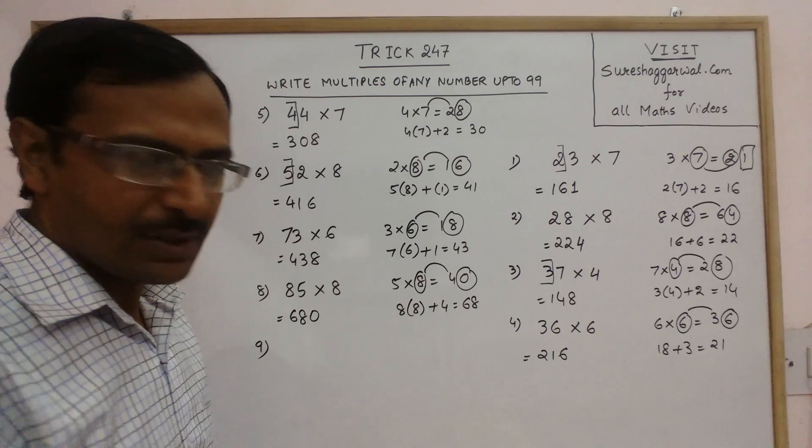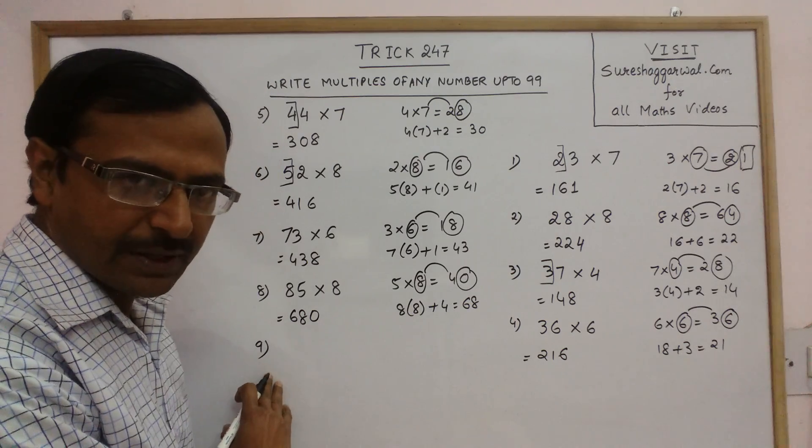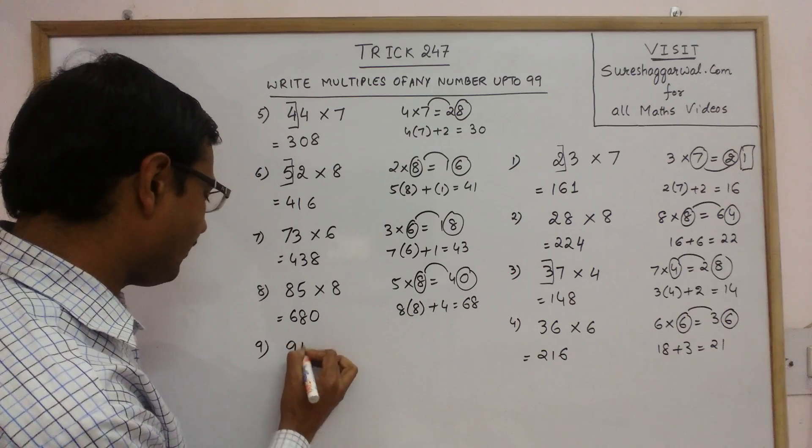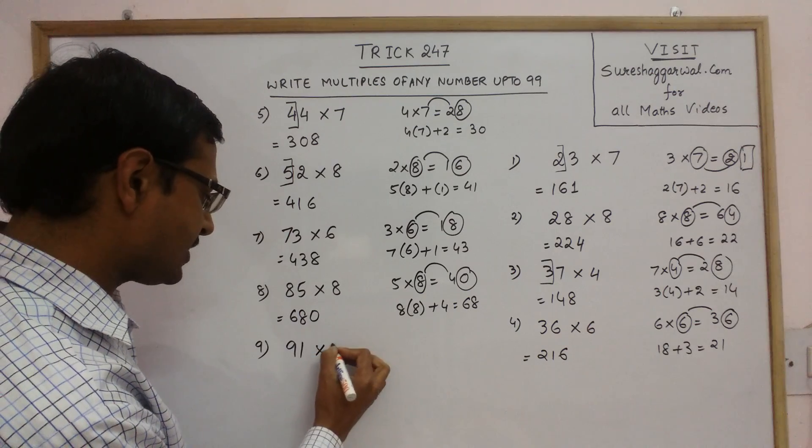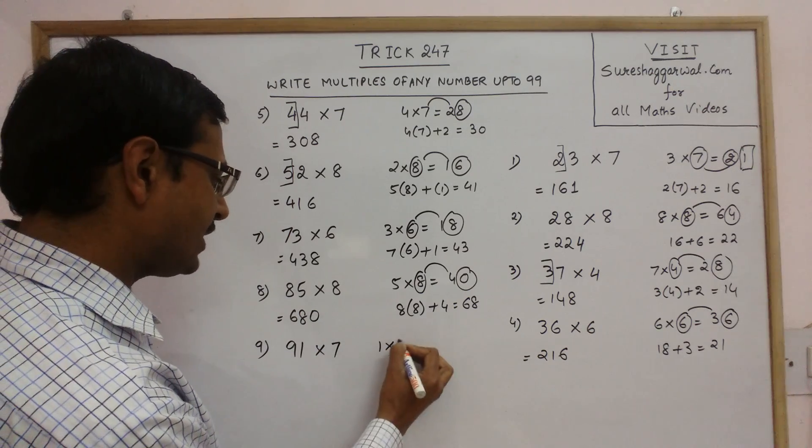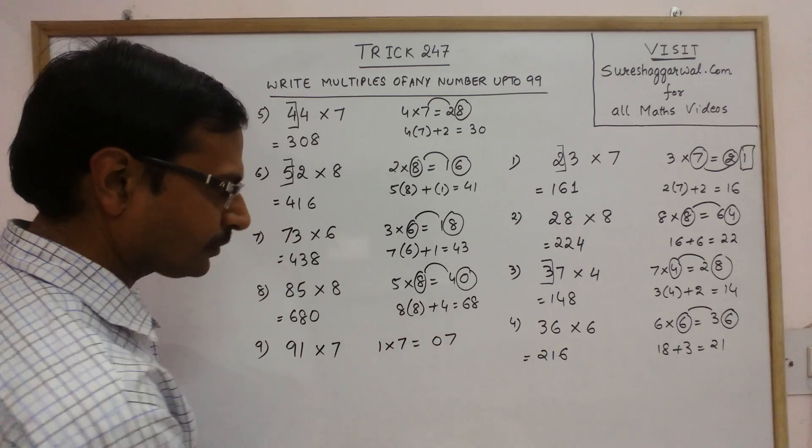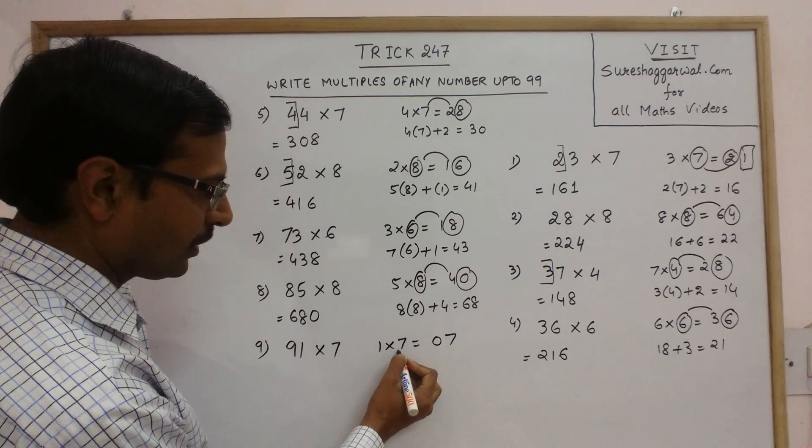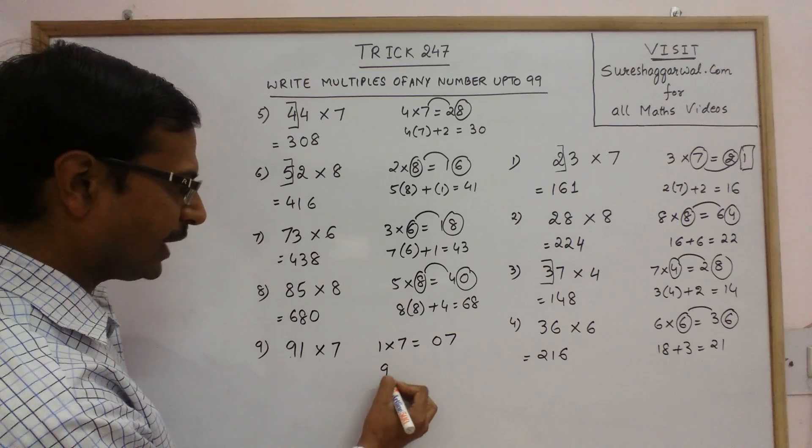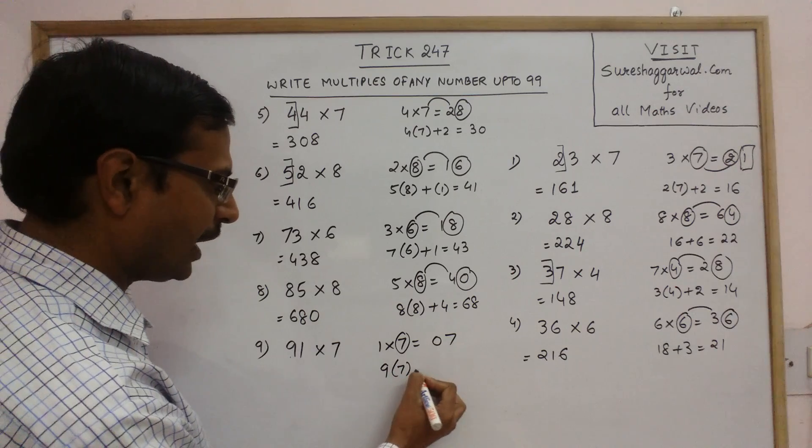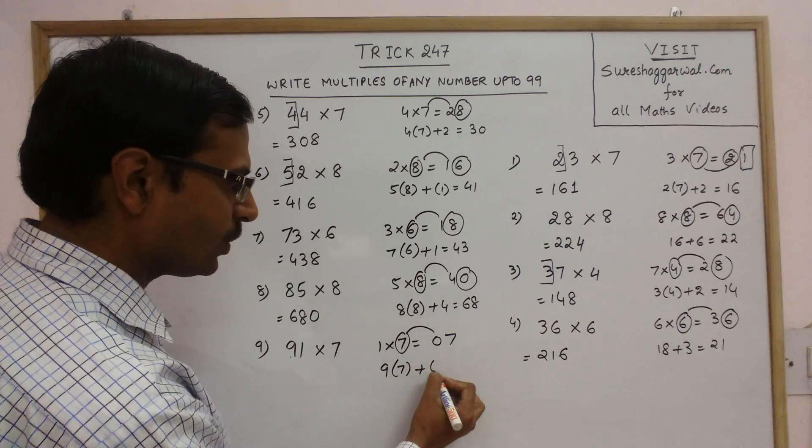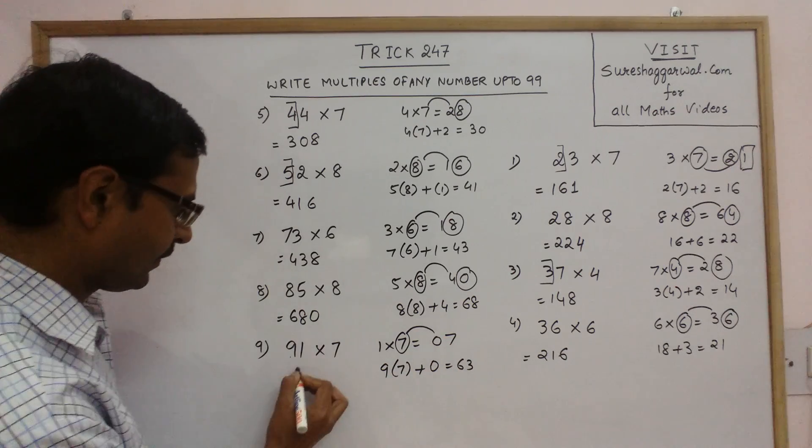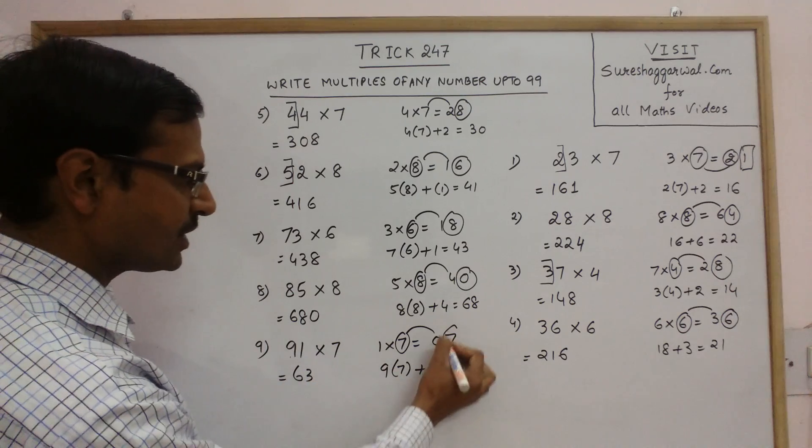Take one more example. Say we have a number in the line of 91 into 7. So 1 into 7 is 7. Write 07. We need to have 2 digits here. So here 9 is there. So 9 into this number 7 added to this number 0. This is 63 and last digit is 7, 637.